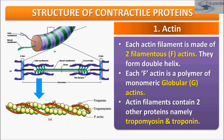In the resting stage, a subunit of troponin — and these are the subunits — masks the active binding site for myosin on the actin filament. That means myosin comes and attaches to the actin, but in the resting stage, these troponin subunits actively mask the binding site on actin.